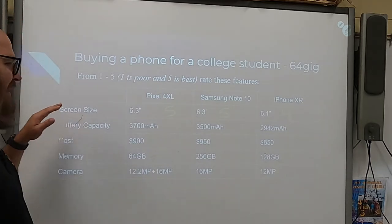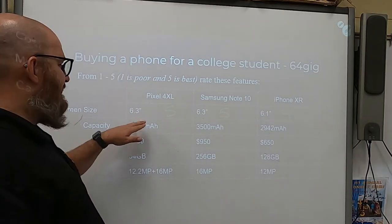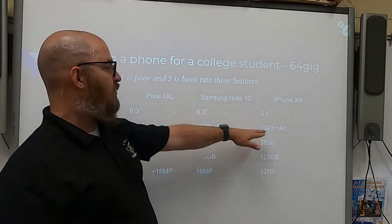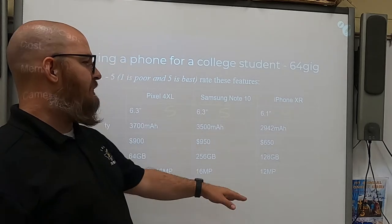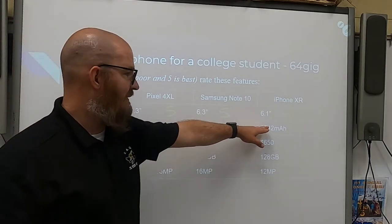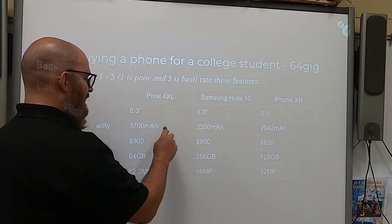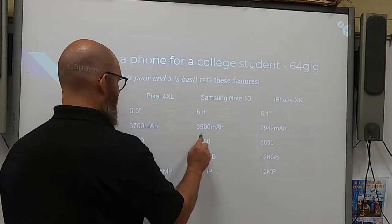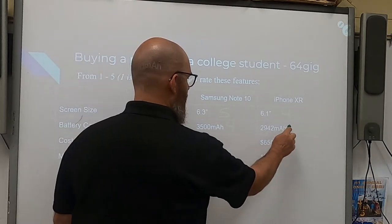Battery capacity: 3,700 milliamp hours is more than 3,500, which is way more than 2,942. So we're going to go five, four, three.